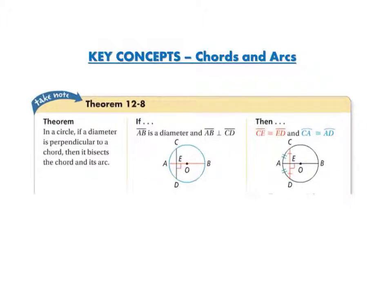Theorem 12-8 states that in a circle, if a diameter is perpendicular to a chord, then it bisects or cuts into two equal sections the chord and its arc. So I have this half of chord CE and the other half ED, they're congruent, which gives us arc CA is congruent to arc AD.